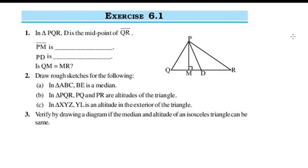For exercise 6.1, the first question: In triangle PQR, D is the midpoint of QR, and PM is a line segment. We need to identify whether we call it PM or PD.